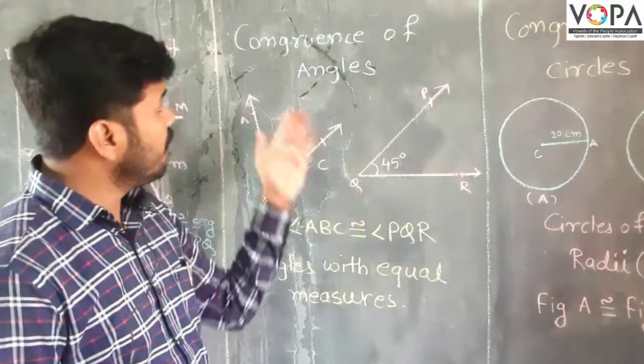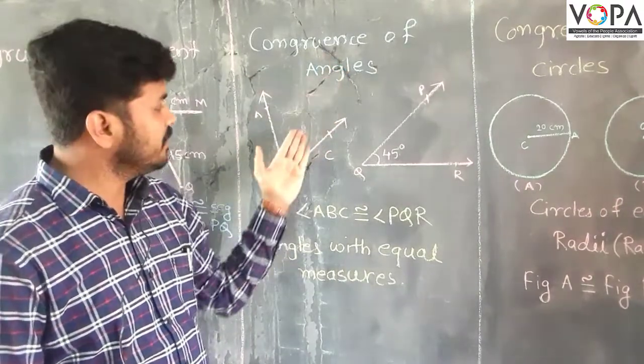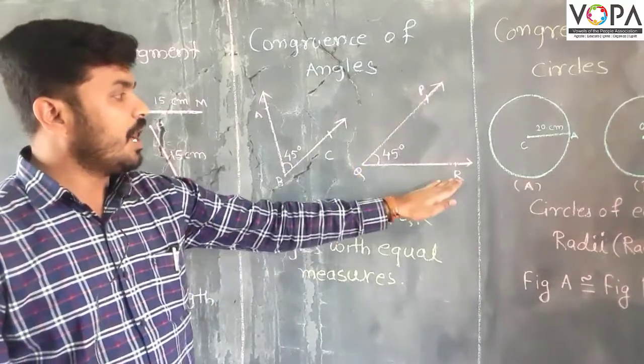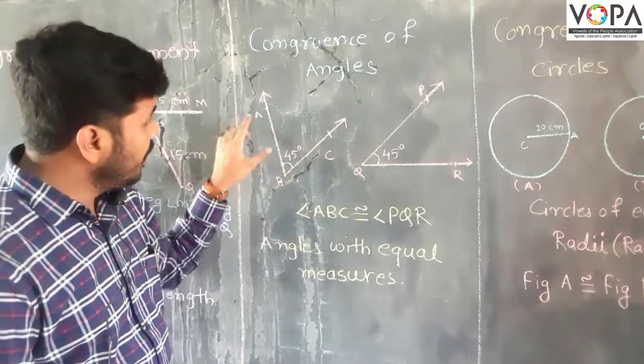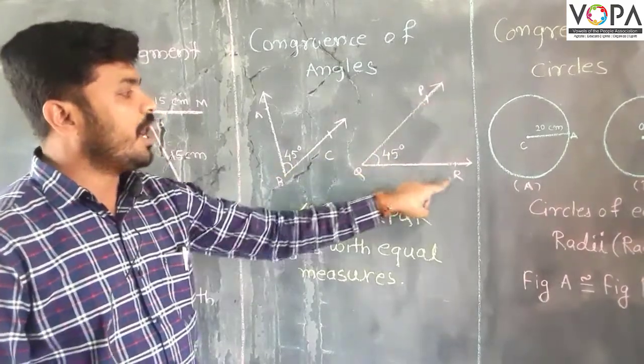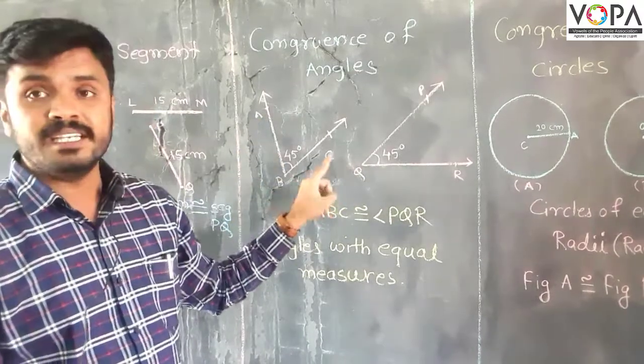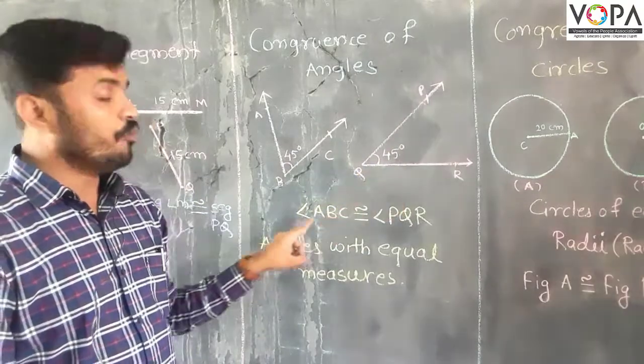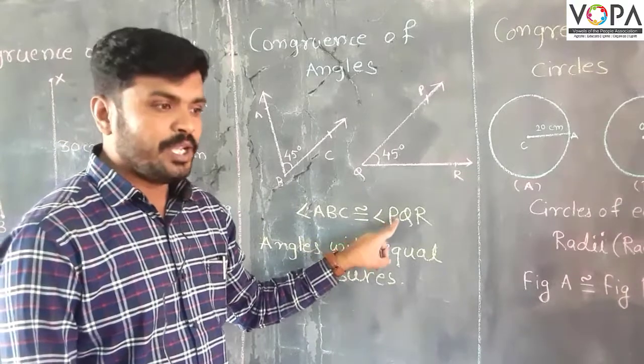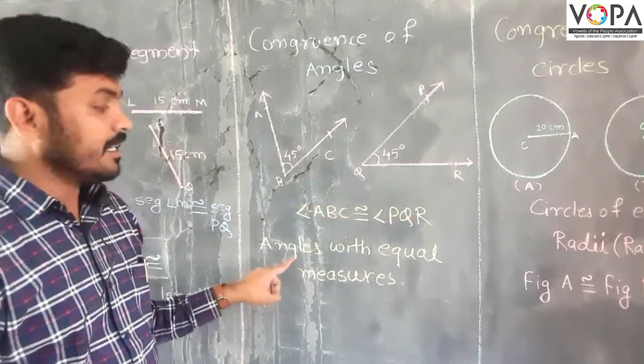Now the congruence of angles. Here is one figure: angle ABC and angle PQR. If you see carefully, angle ABC is equal to 45 degrees and angle PQR is also 45 degrees. That means angle ABC is equal to angle PQR, so we can say that angle ABC is congruent to angle PQR.